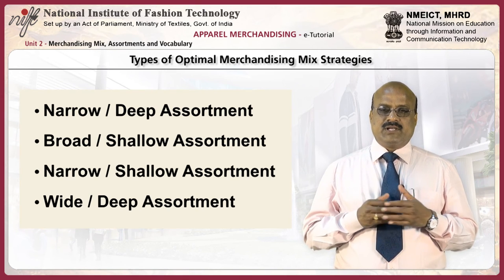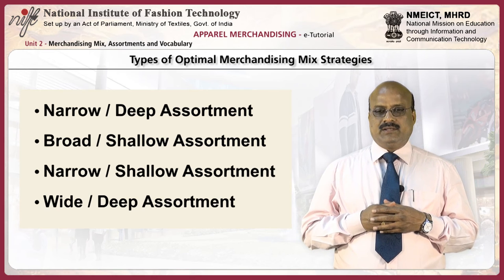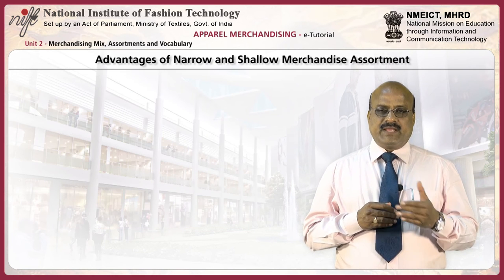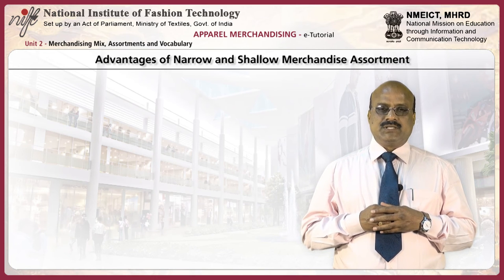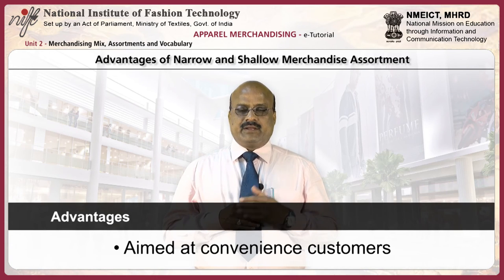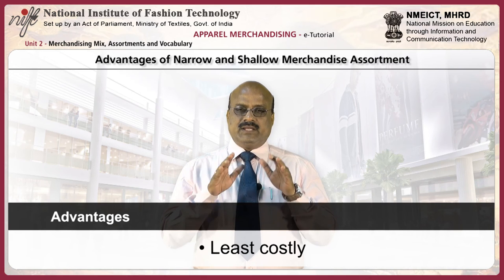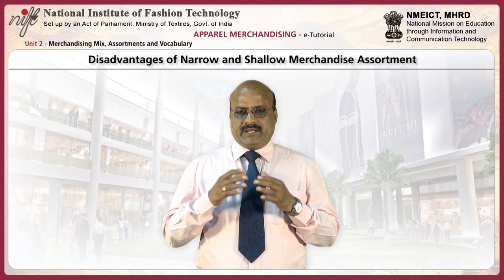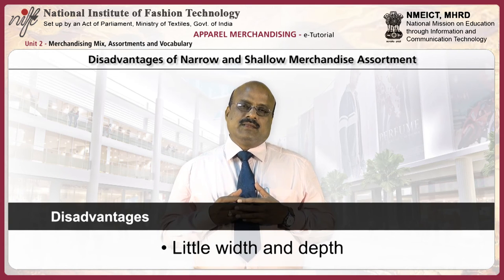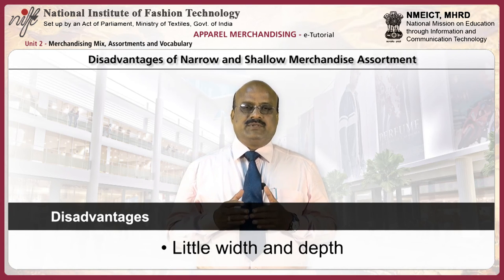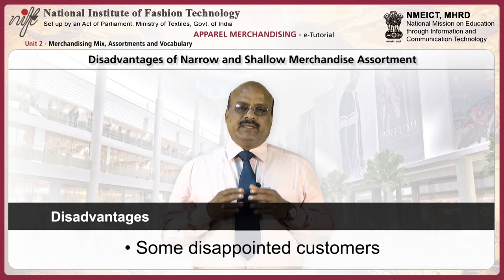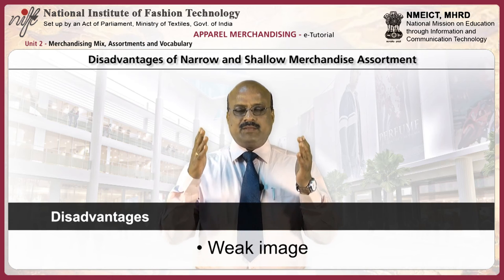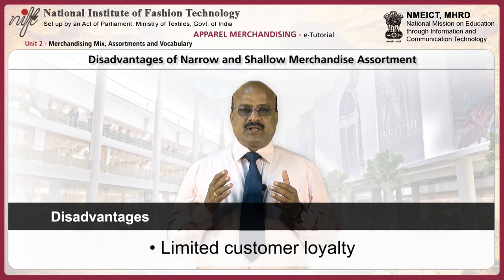The other types — narrow and shallow assortments and wide and deep assortments — are not very popular with stores. The advantages of narrow and shallow merchandise assortments are that they are aimed at convenience customers, are least costly and are high turnover items. The disadvantages are that they have little width and depth, there is no one-stop shopping, there could be disappointed customers, they have a weak image, limited customer loyalty and a small trading area.